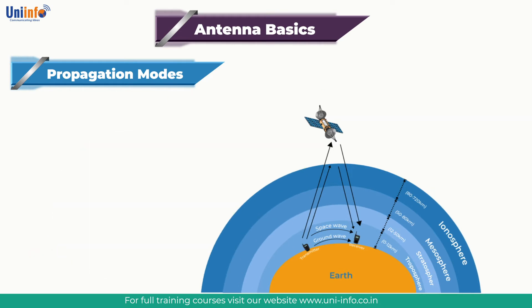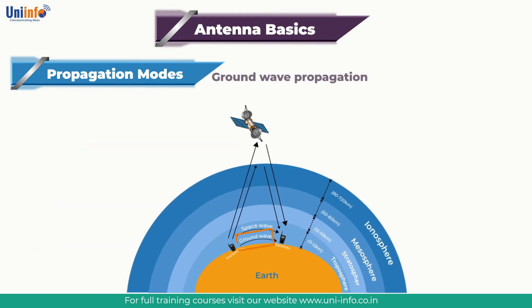Our next topic is Ground Wave Propagation. When signals travel via the ground wave, they are modified by the ground or terrain over which they travel. They also tend to follow the Earth's curvature. Signals heard on the medium wave band during the day use this form of RF propagation.